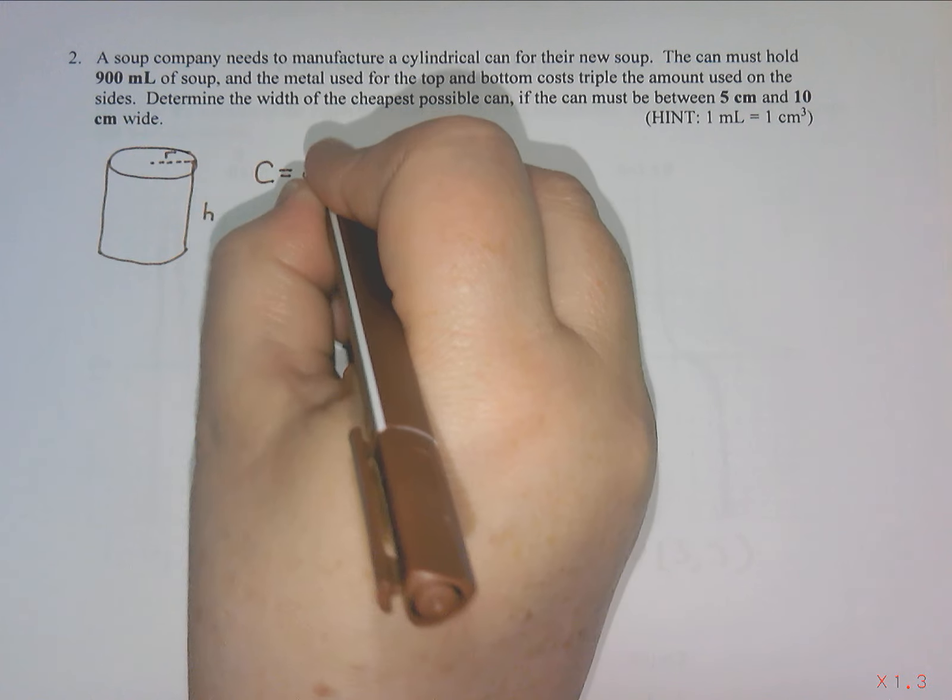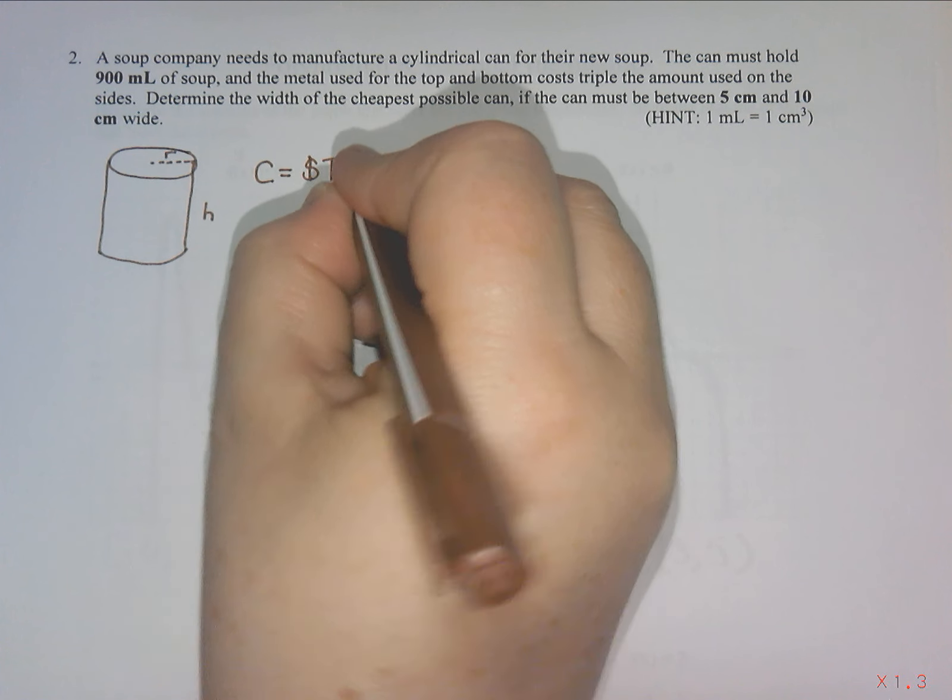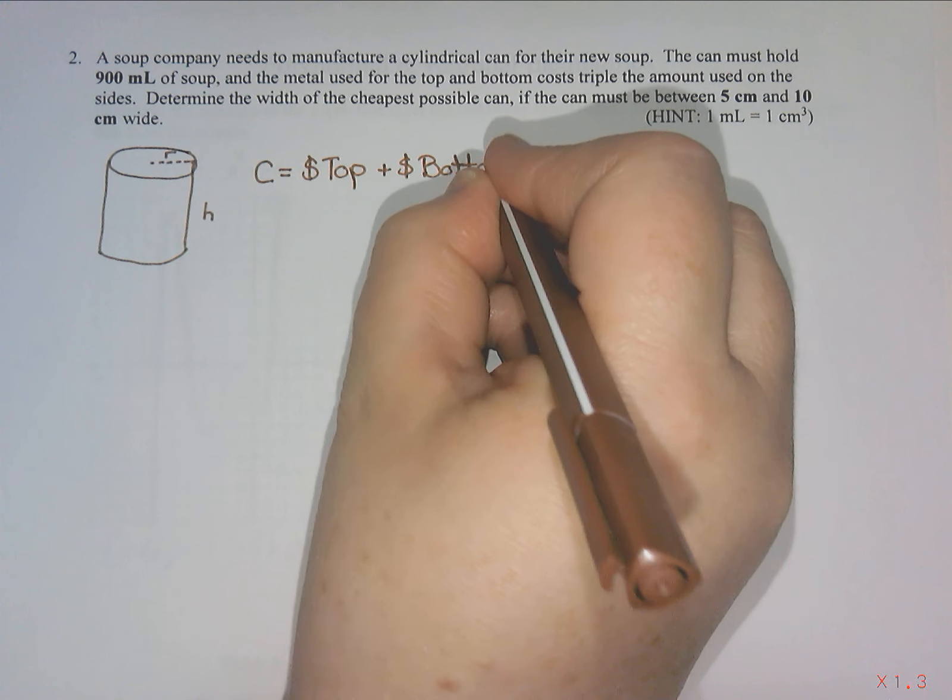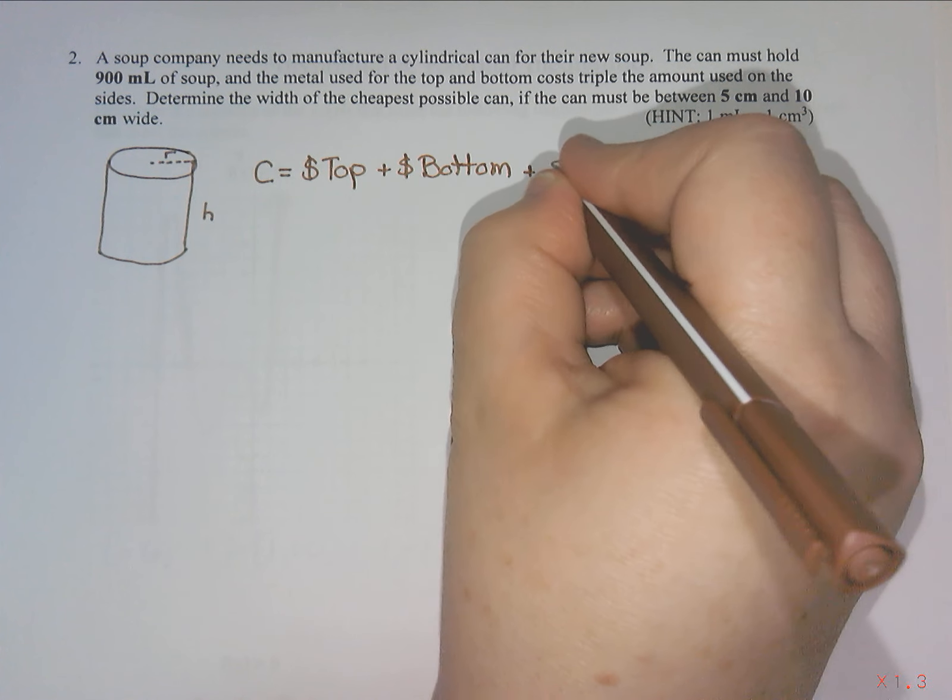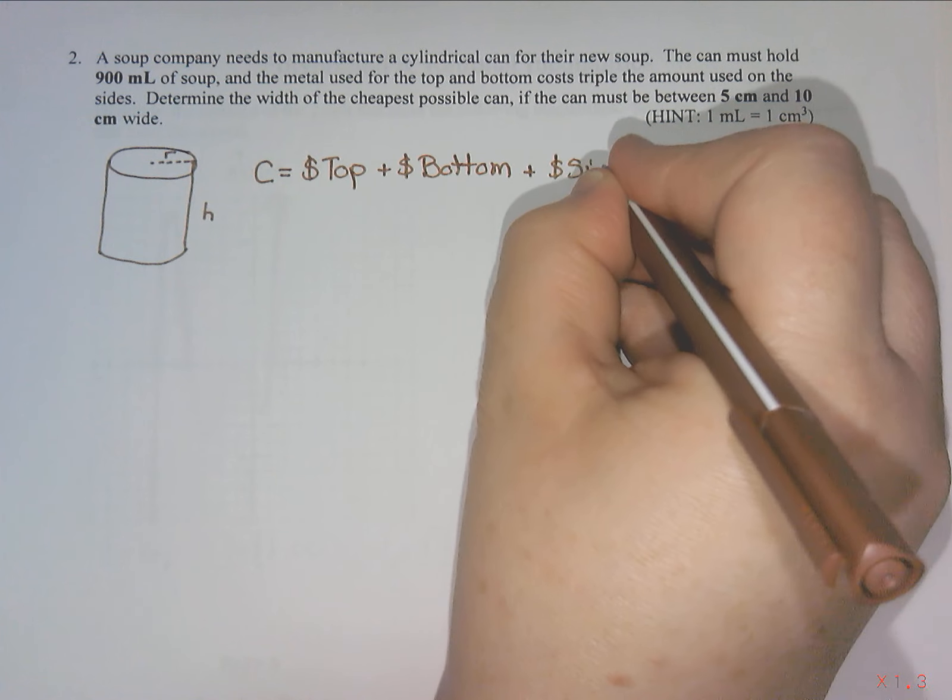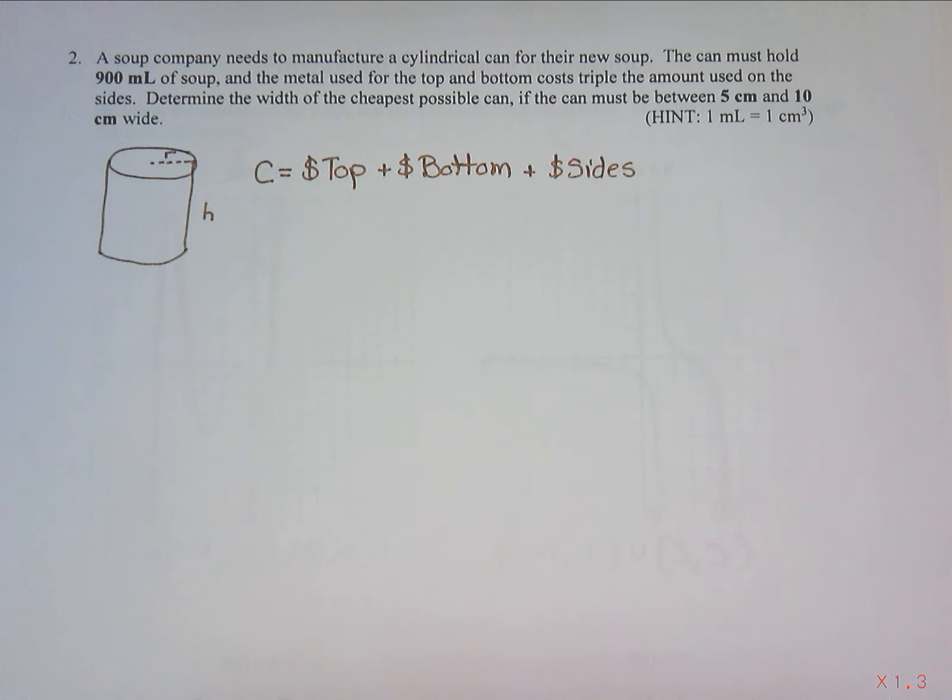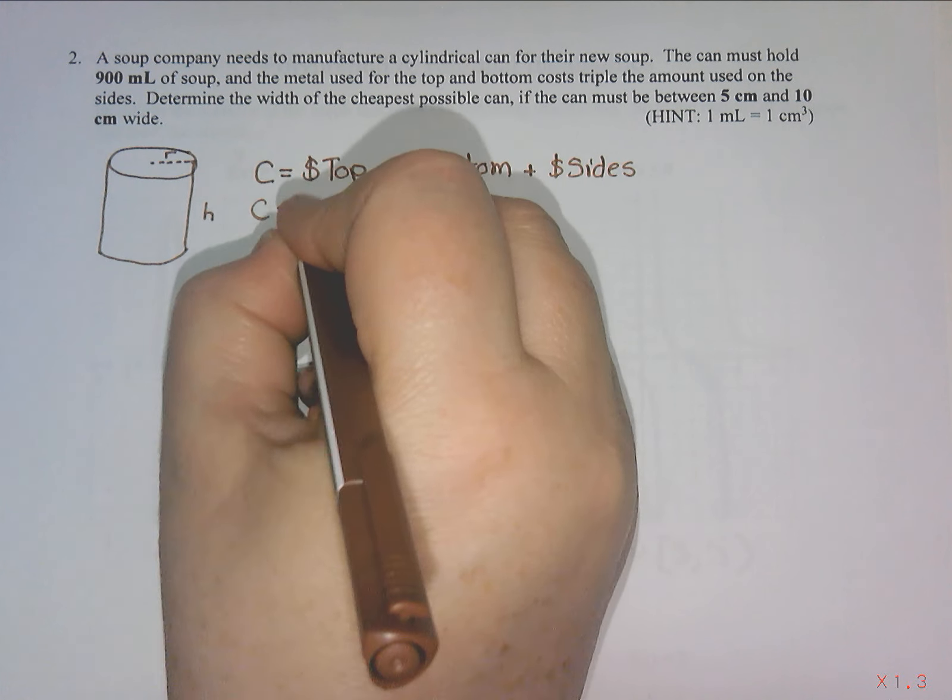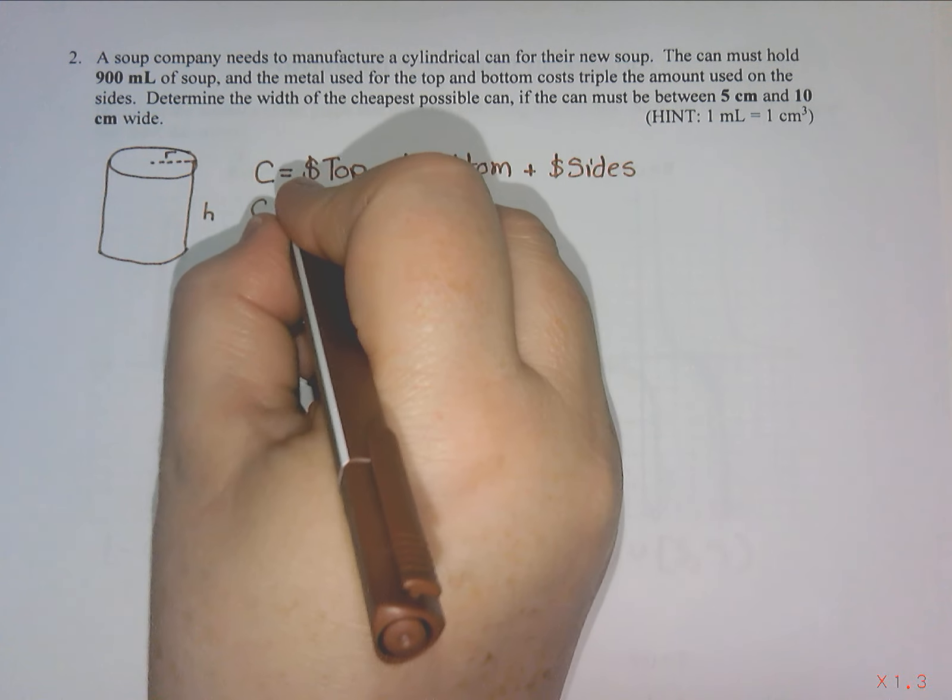The cost would be made up of the top and the bottom, because that costs a little bit more, and then the sides, which cost a little bit less. So we're going to do the cost of the top, cost of the bottom, and cost of the sides. It doesn't give me an actual price, it just says the top and bottom are triple the amount on the sides.